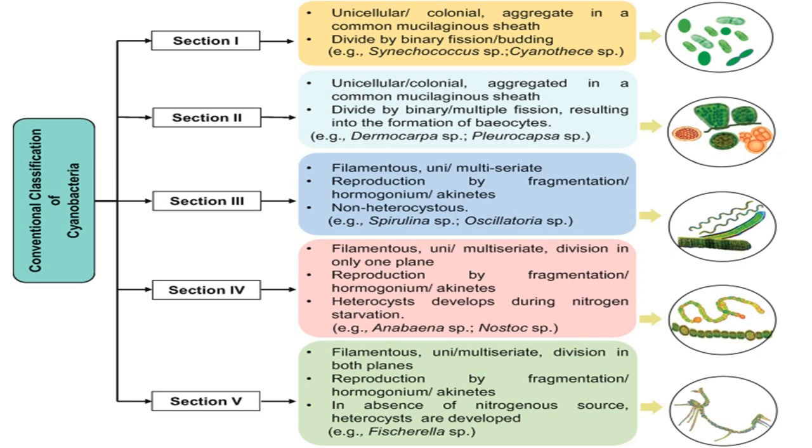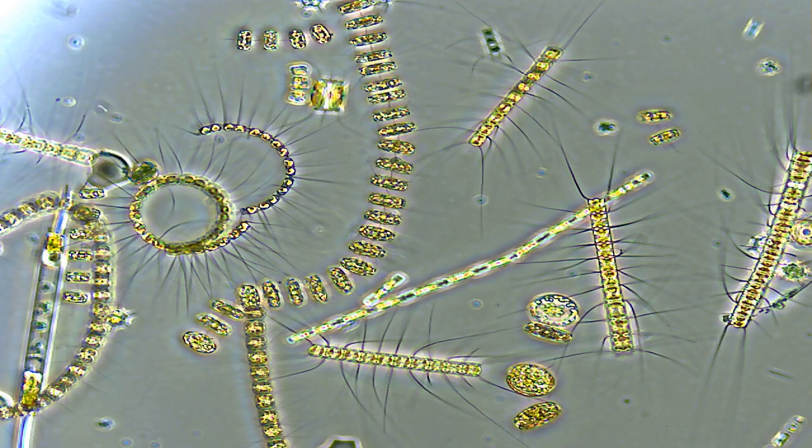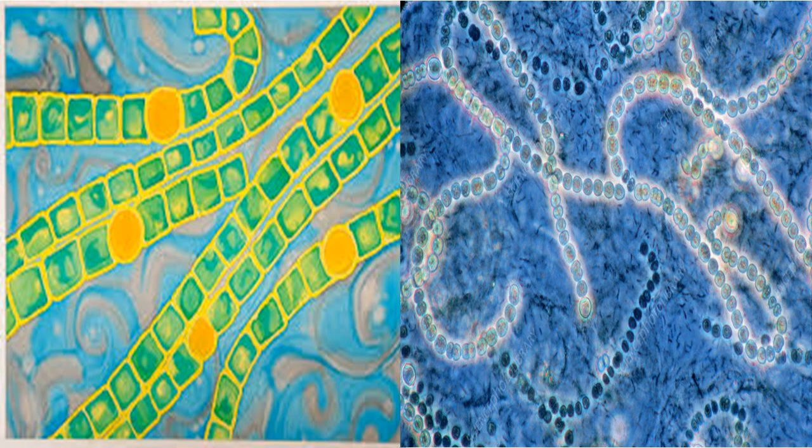Cyanobacteria are a very large and diverse phylum. They are photoautotrophic prokaryotes, defined by their unique combination of pigments and their ability to perform oxygenic photosynthesis. They often live in colonial aggregates that can take on a multitude of forms.